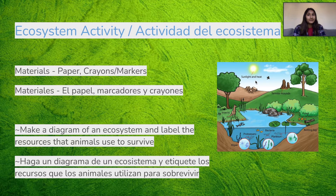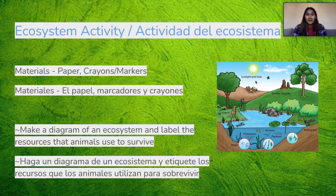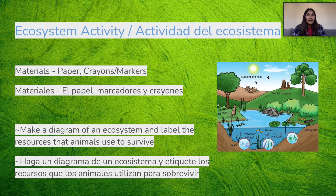For our activity today, we'll be making a diagram of an ecosystem near you and labeling the resources that an animal may need to survive there. Remember, the three things that animals need to survive are shelter, food, and water. You'll need some paper and then some crayons or markers to draw your ecosystem. To show you how this works, we're going to take a little virtual field trip to the forest.